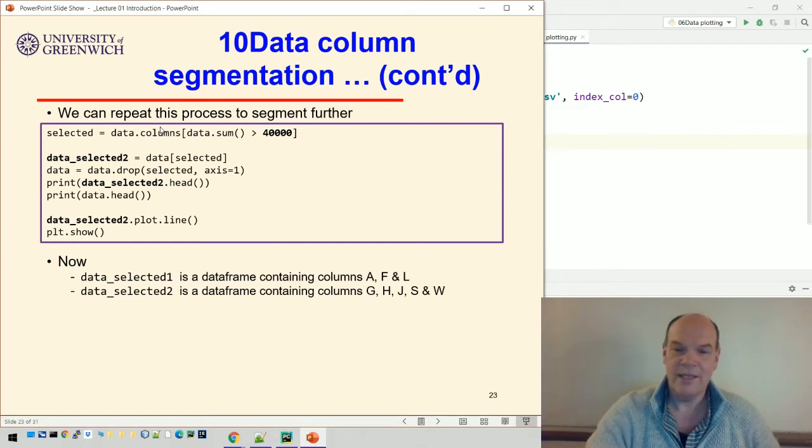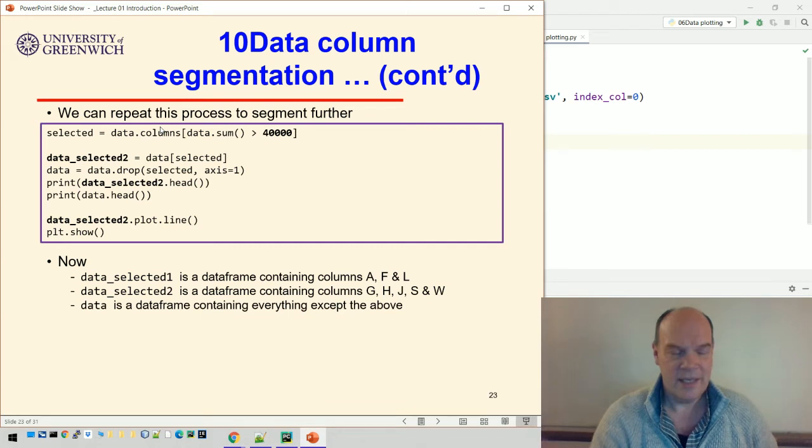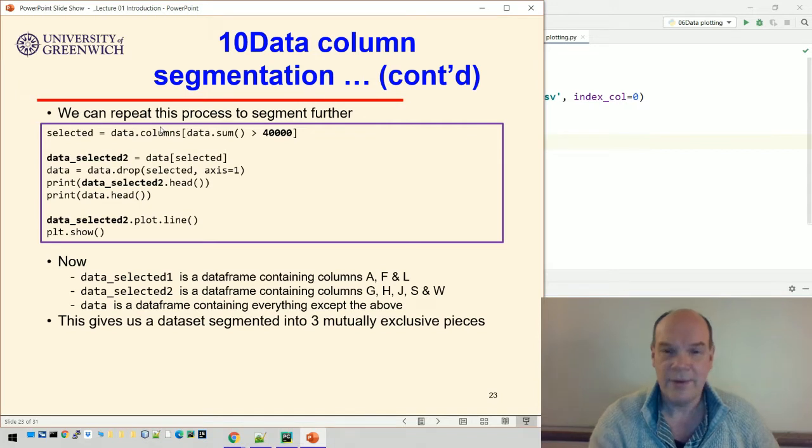That's G, H, J, S, and W. And then data, because we dropped those columns, that contains everything else. And so we've now got three pieces.